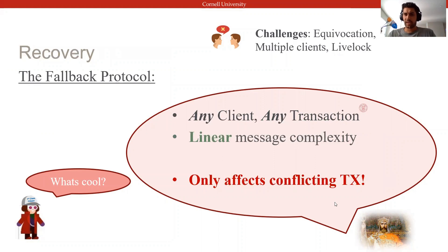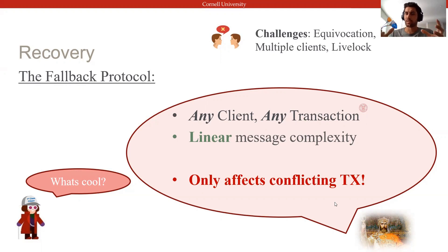Clients may misbehave during the commit protocol and block contending transactions, so the way Basel reconciles this is by allowing any client to finish the commit protocol of any transaction. The recovery protocol has some nice properties, such as requiring a single round-trip in most cases, involving only a single shard, and doing so with only linear communication complexity.